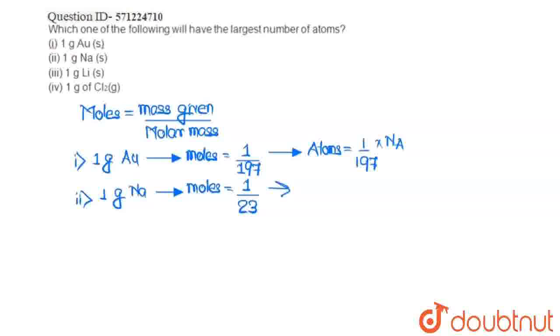So, this will be the number of moles of sodium. To calculate the number of atoms of sodium, we multiply the number of moles calculated by the Avogadro number NA.